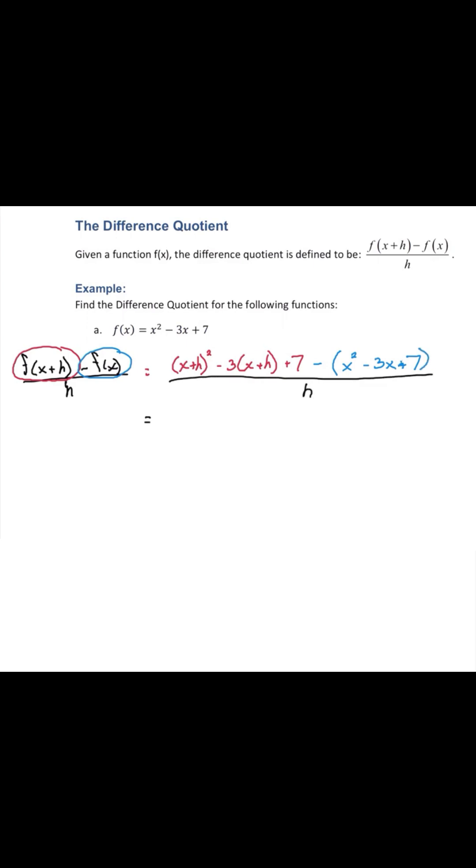Now simplifying this, we'll square the binomial, x squared plus two xh plus h squared. Distribute the negative three, bring down the seven, and then distribute the negative sign. Keep in mind all of that is over h.